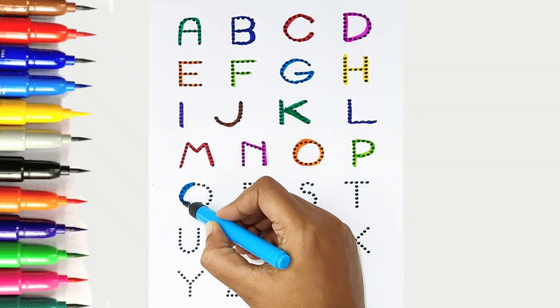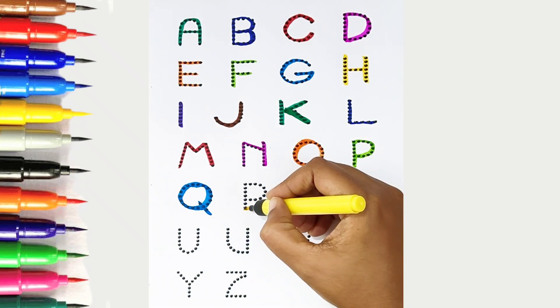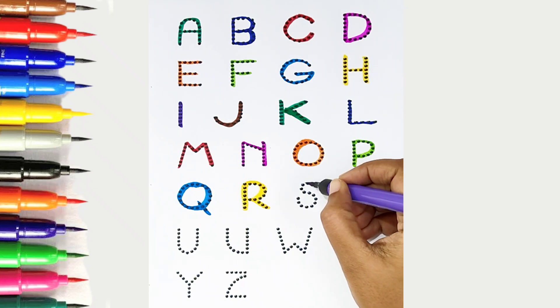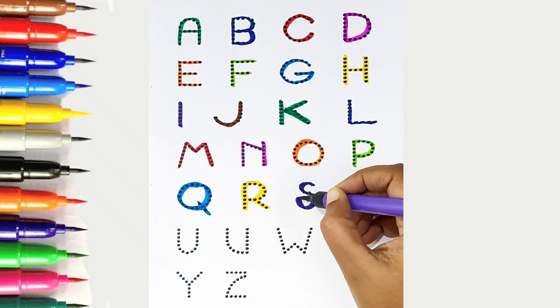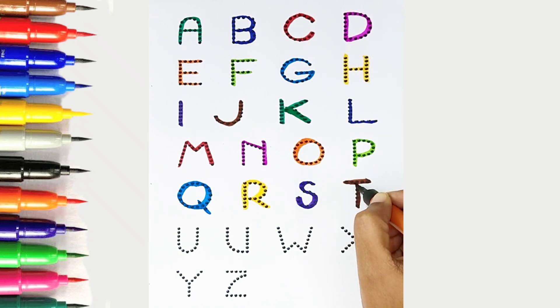Q. Light blue color, Q is for quilt. R. Yellow color, R is for rabbit. S. Violet color, S is for star. T. Brown color, T is for tiger.